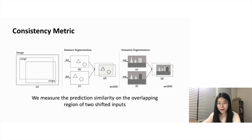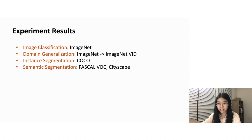In order to measure how sensitive the network is to input shifts, we compute the prediction similarity on the overlapping region of two shifted inputs. To evaluate the effectiveness of our approach, we test our method on image classification, domain generalization, instance segmentation, and semantic segmentation on both accuracy and consistency metrics.